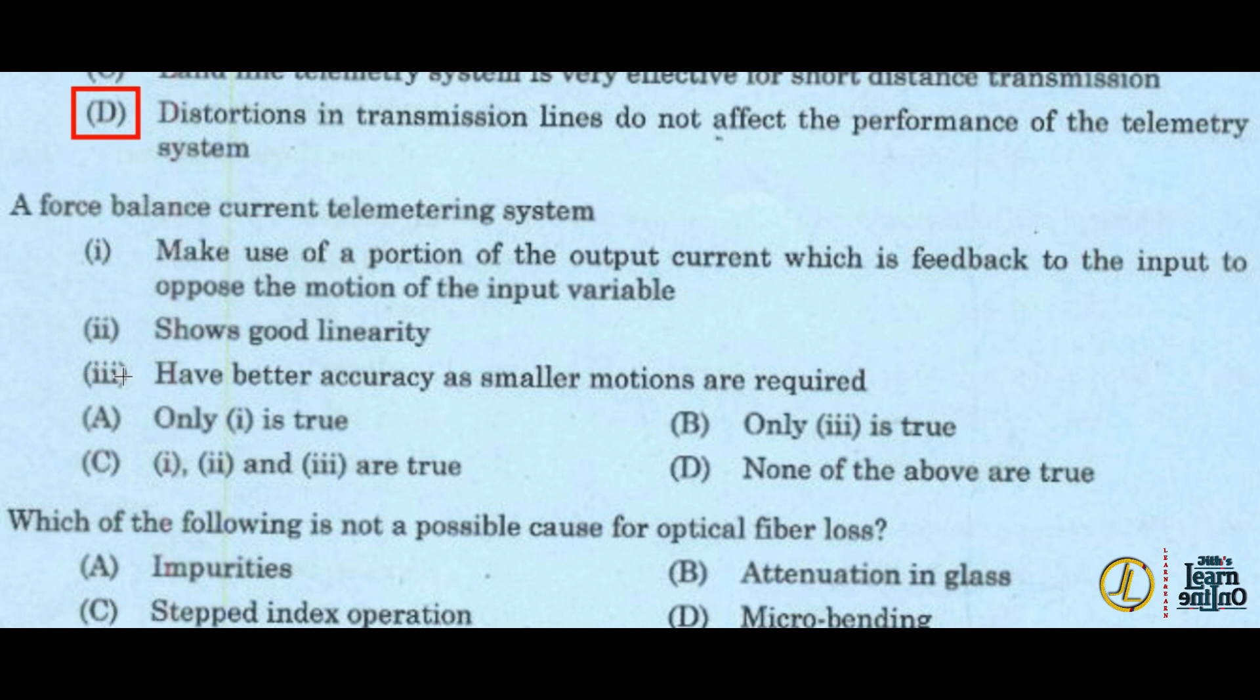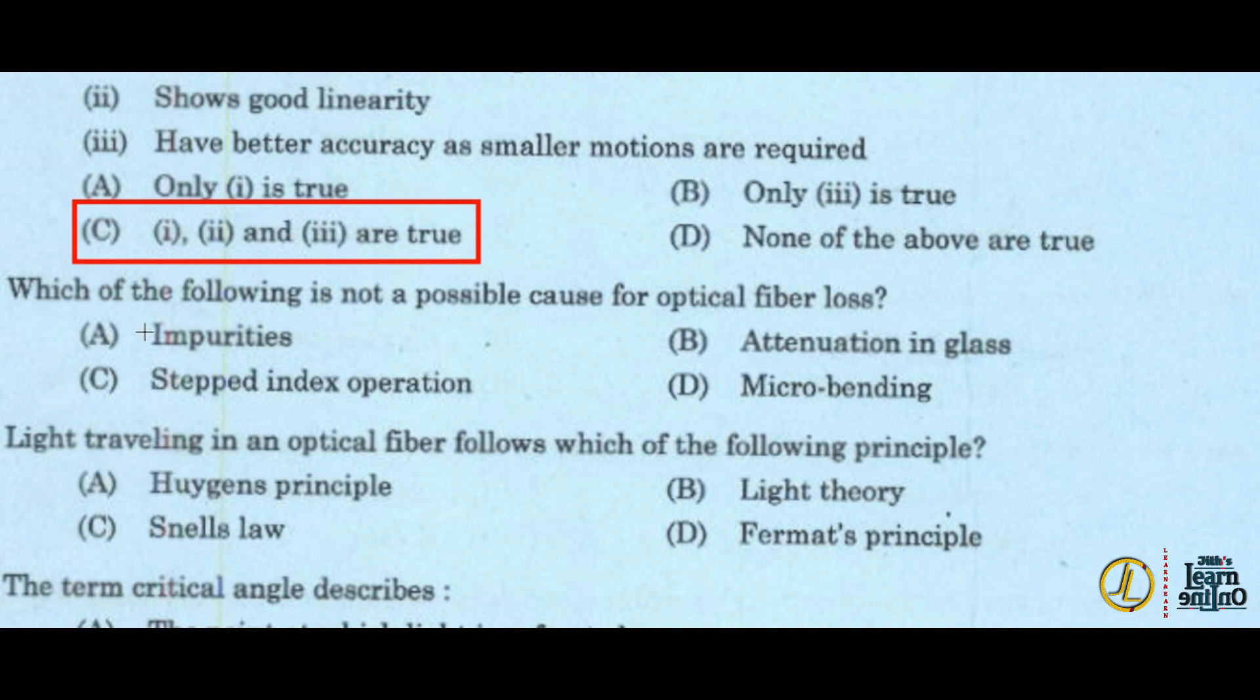A force balance current telemetry system: one, two, three are true. Option C is the answer. One, make use of portion of the output current which is fed back to the input to oppose the motion of the input variable. Two, shows good linearity. Three, have better accuracy as smaller motion are required. One, two, three are true.